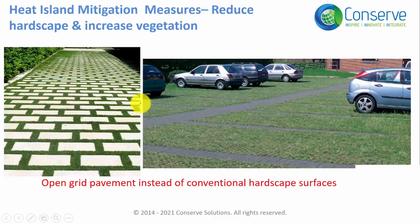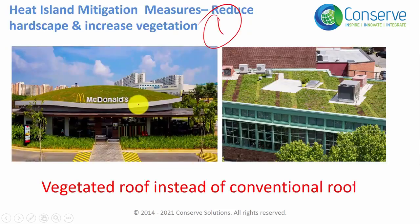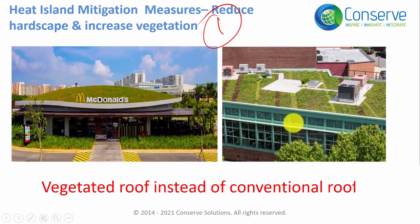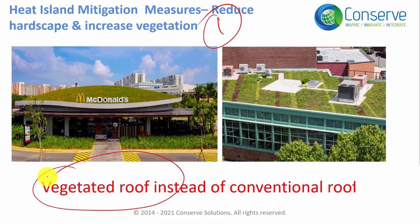The first strategy is to reduce hardscape and increase vegetation. Most hardscape surfaces result from the roof, so conventional roofs can be replaced by vegetated roofs, which significantly reduces the hardscape surface area exposed to the sun. Consider replacing conventional roofs with vegetated roofs.